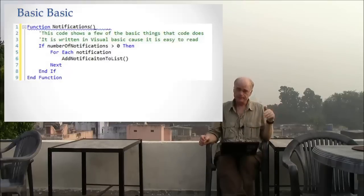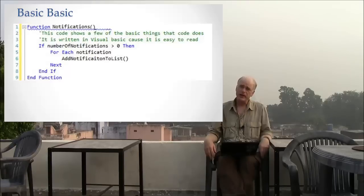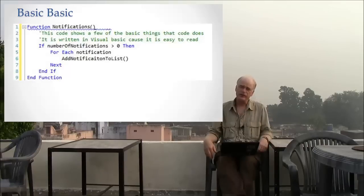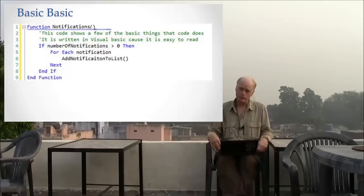Lines 2 and 3 are comments. Comments are very helpful because the programmer can type them in to give themselves or other people who read their program little hints about what's going on. The comments, highlighted in green in this case, are not commands to the computer — they're really notes from programmer to programmer.